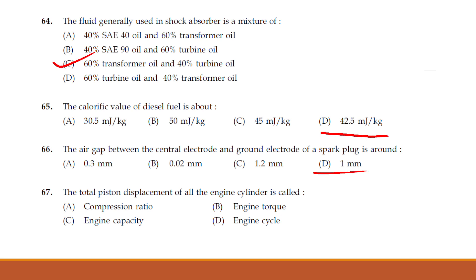The total piston displacement of all the engine cylinders is called: compression ratio, engine torque, engine capacity, or engine cycle. The answer is option C — engine capacity.